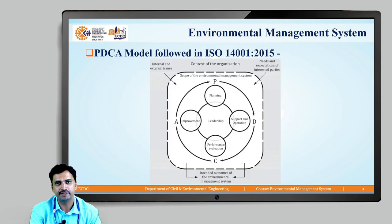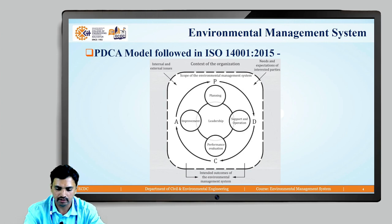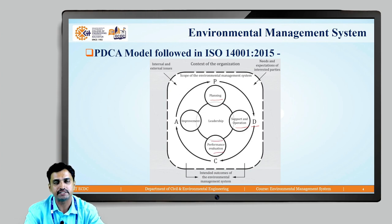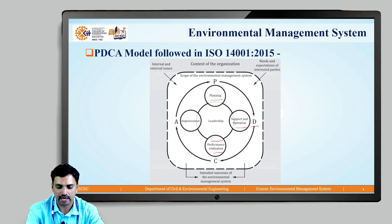Now let us see how this PDCA approach is used in the standard ISO 14001-2015 for the implementation of an Environmental Management System. As we can see, the four elements are specified as: Planning; then under the Do part, the elements are given as Support and Operation; in the checking phase, the requirements are given as Performance Evaluation; and the Act part requirements are specified as Improvement. So it is a closed loop, a closed cycle.